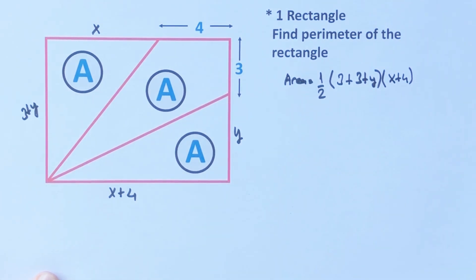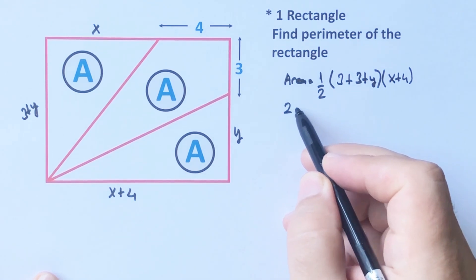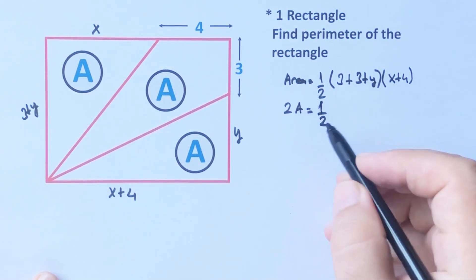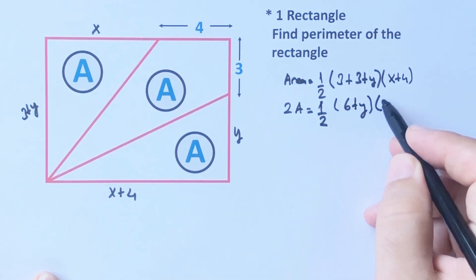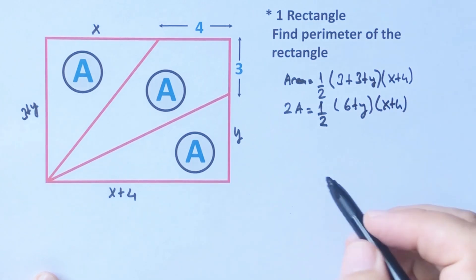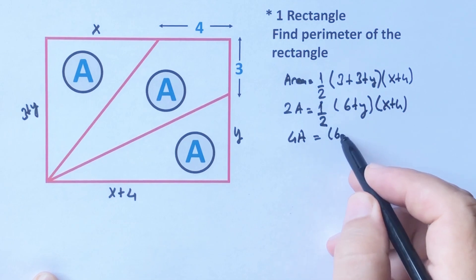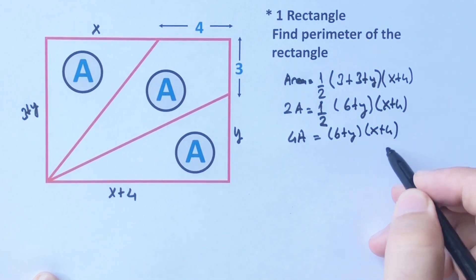We know that the area of the trapezoid is given as A, so two A equals one over two times six plus y times x plus four. Therefore, four A equals six plus y times x plus four. This is the first equation.